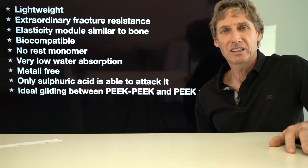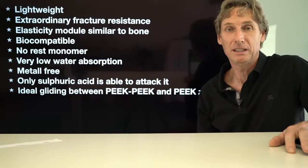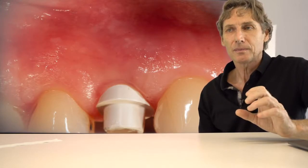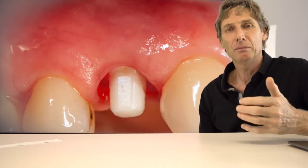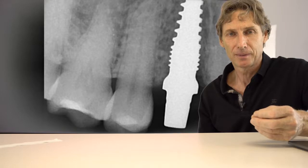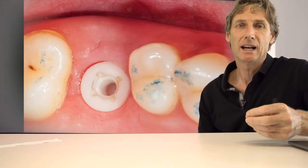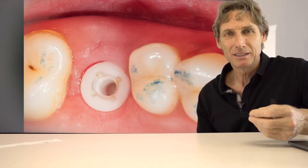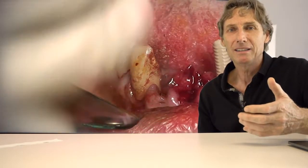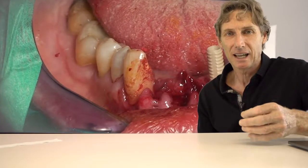So why is there such big confusion in dentistry about this material? That's because the first appearance of PEEK in dentistry was in provisional parts for implants — healing cups and provisional abutments. This caused the impression that PEEK is a material for provisional use only. But that is absolutely wrong.